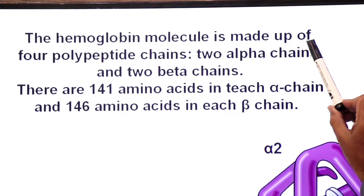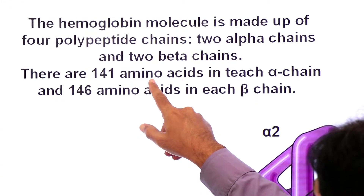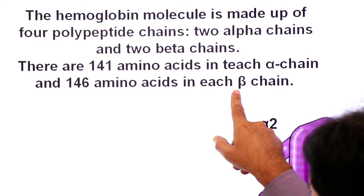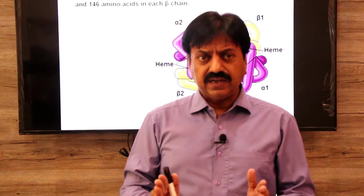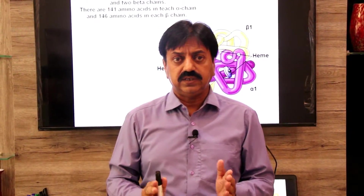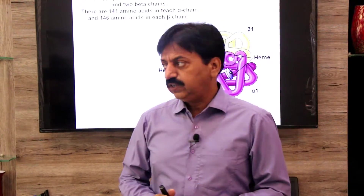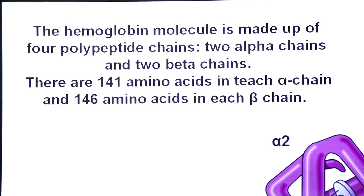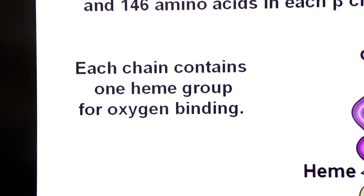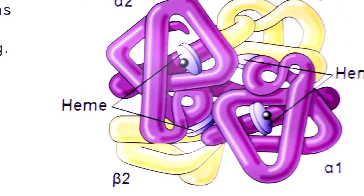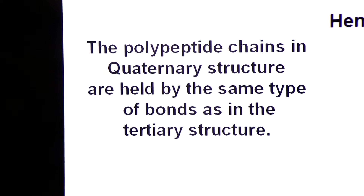The hemoglobin molecule is made up of 4 polypeptide chains: 2 alpha chains and 2 beta chains. There are 141 amino acids in each alpha chain and 146 amino acids in each beta chain. Therefore, the total number of amino acids in hemoglobin is 574 amino acids. Each chain contains one heme group for oxygen binding. The polypeptide chains in quaternary structure are held together by the same bonds as in tertiary structure.